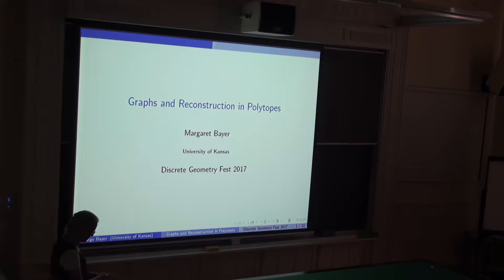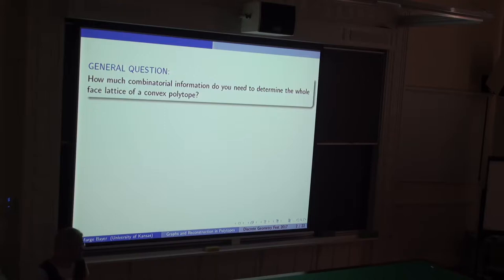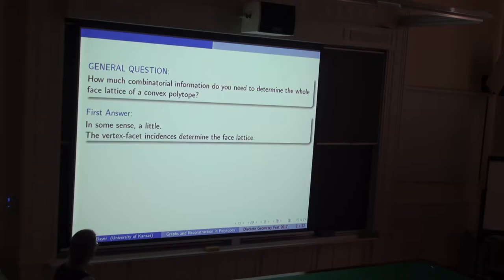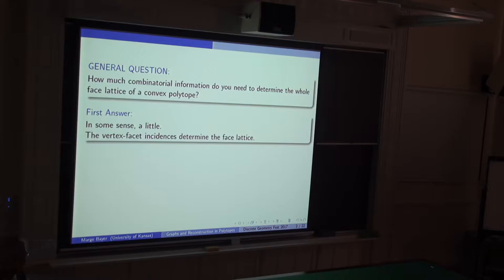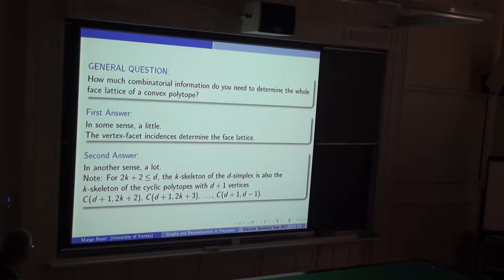Graphs, reconstruction, and polytopes. The general question is: how much combinatorial information do you need to determine the whole face lattice of a convex polytope? One answer is that very little — if you just knew the list of facets and the vertices each included, you could of course determine the whole face lattice by intersecting the facets. But usually when this question is asked, we're looking for information from the bottom up: if you have the low part of the face lattice, can you construct the rest?